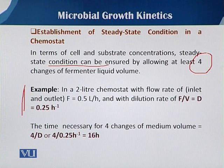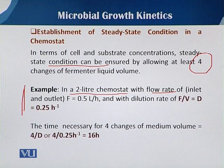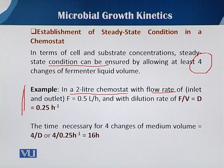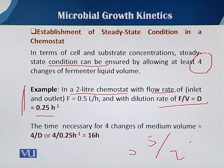For example, in a two-liter fermentation chemostat process with a flow rate of 0.5 liters per hour as both inlet and outlet, we can easily calculate the dilution rate D. Dividing 0.5 by 2, the answer is D = 0.25 per hour.